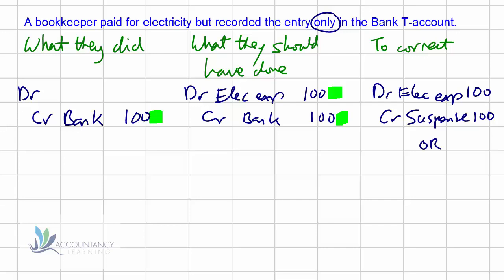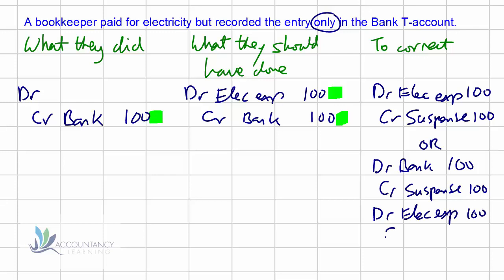If the task asks you to do this in two steps: first, remove the error — since they just credited bank, we reverse that by debiting bank with 100, and because we can't have a single entry, we credit suspense. The second step is to put in what they should have done: debit the electricity expense and credit bank. Whether it's a single journal or two journals, the overall effect is the same — debit the expense and credit suspense.